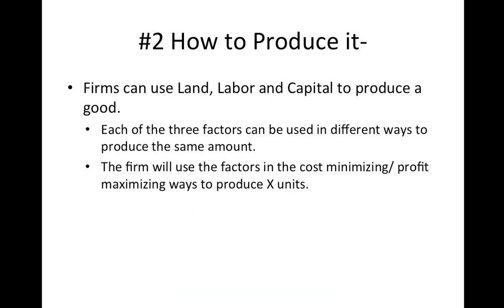The second question is how to produce it, and this goes back to chapter one a little bit. Firms — the entrepreneurship — use land, labor, and capital to produce a good or a service. Each of the three factors can be used in different ways to produce the same amount. Maybe you decide to use more capital and let a couple of employees go, or make it more labor intensive and hire more people. How something is produced is decided by the entrepreneurs, not the government.